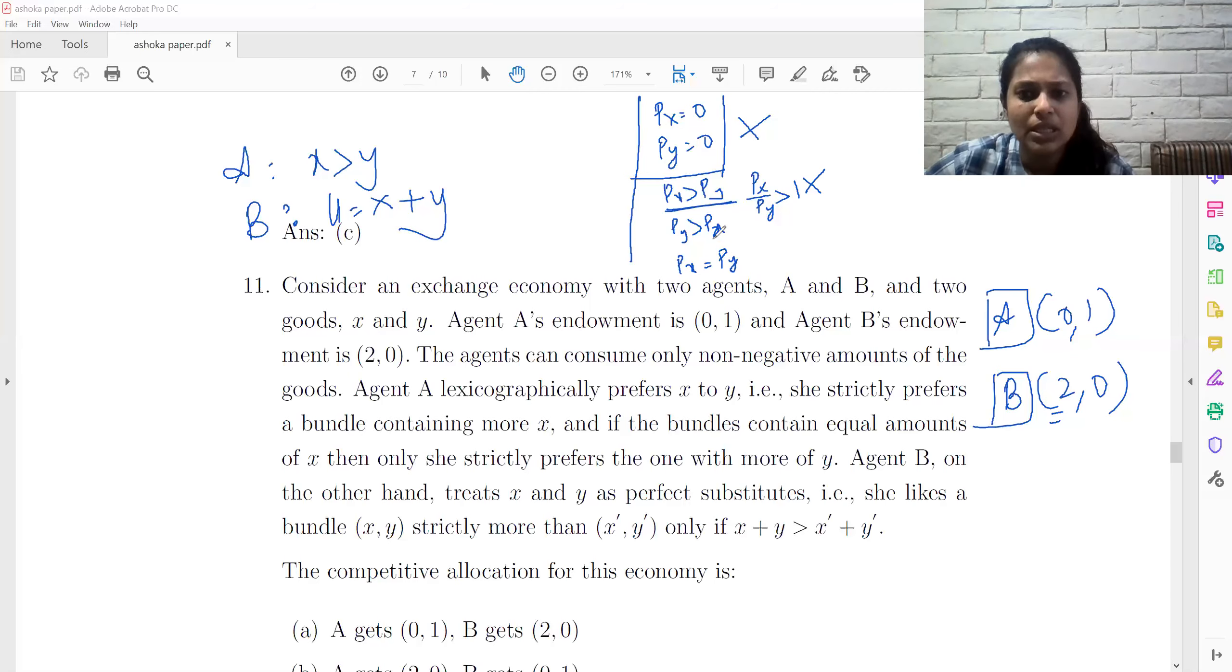Now similarly, the fourth possibility is when PY is the more expensive good. PY is the more expensive good. Then what will happen is that if PY is a more expensive good and PX is a cheaper good, then agent B will not want to trade. He will be satisfied.